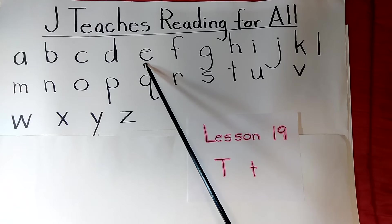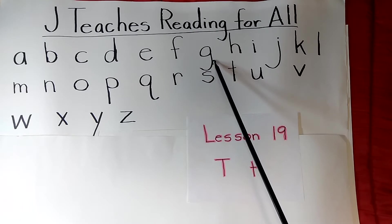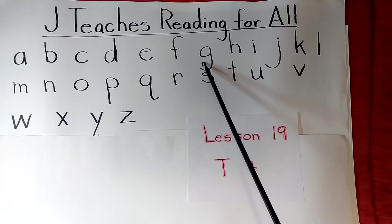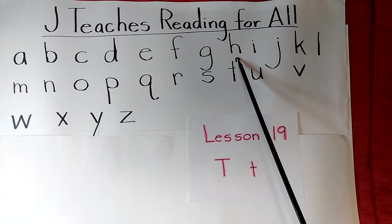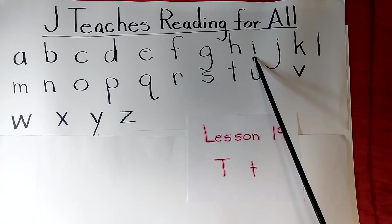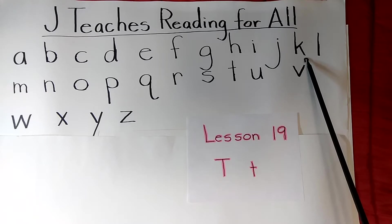E — E, egg. F — F, flag. G — G, gun. H — H, house. I — I, Indian. J — J, jet.